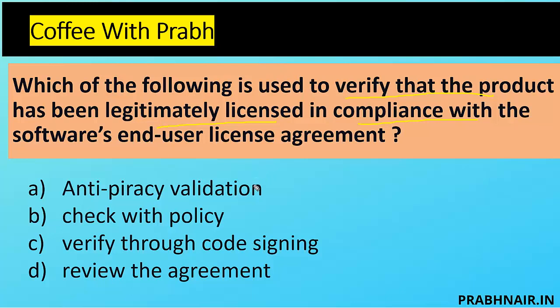Option B is checking with the policy — but even if we check the policy, we require some process to verify it; just checking the policy will not give assurance. Option C is verifying through code signing — code signing only offers integrity and authenticity. When code is delivered by a vendor they attach a signature, and we verify it using a public key, so that's about authenticity and integrity, not compliance. Option D is reviewing the agreement — just reviewing the agreement also won't give that assurance.